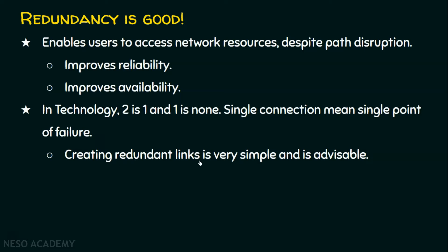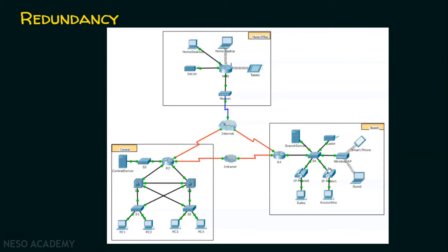Creating redundant links is always advisable because if we encounter some failures, we will be able to handle the situation perfectly. Let's see a scenario with redundancy. In this scenario, we have many ways to reach the internet. Suppose PC1 wants to reach the internet, so it has this way, this way, and this way to reach the internet.